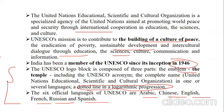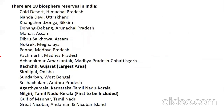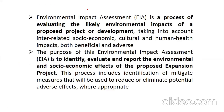UNESCO launched the Man and Biosphere Programme (MAB) in 1971 to establish the relationship between people and environment. There are 18 biosphere reserves in India; the benefit is improving human livelihoods and promoting economic development. Kutch has the largest area among them; Nilgiri (Tamil Nadu/Kerala) was the first to be included in the biosphere reserves of India.